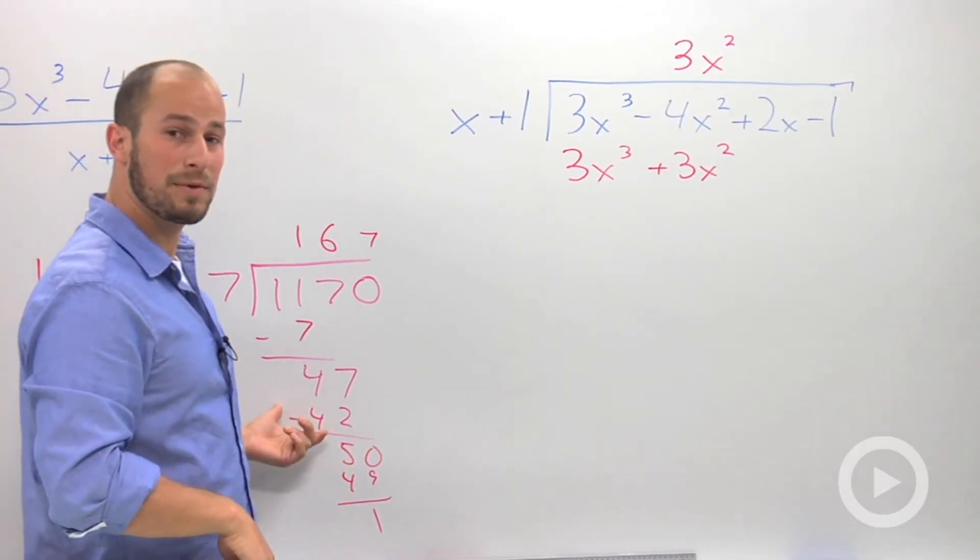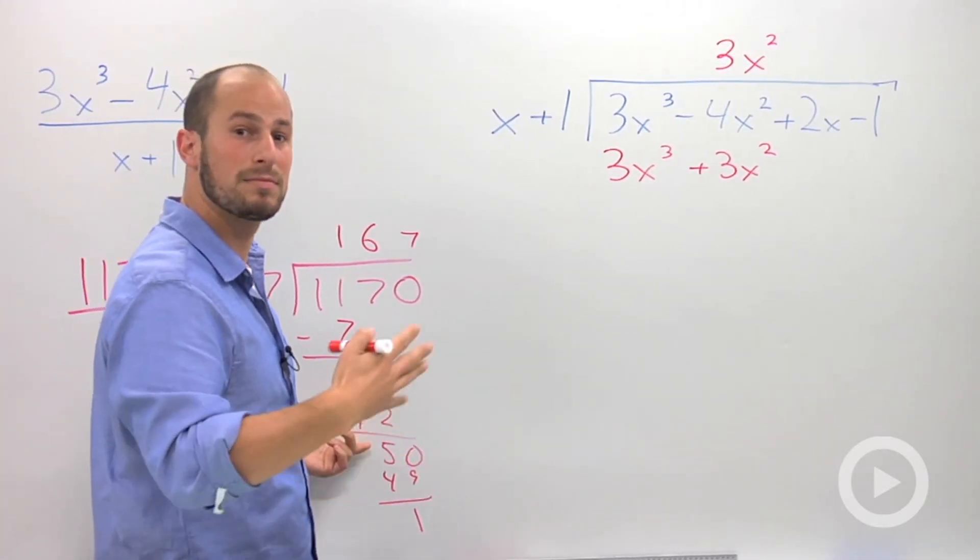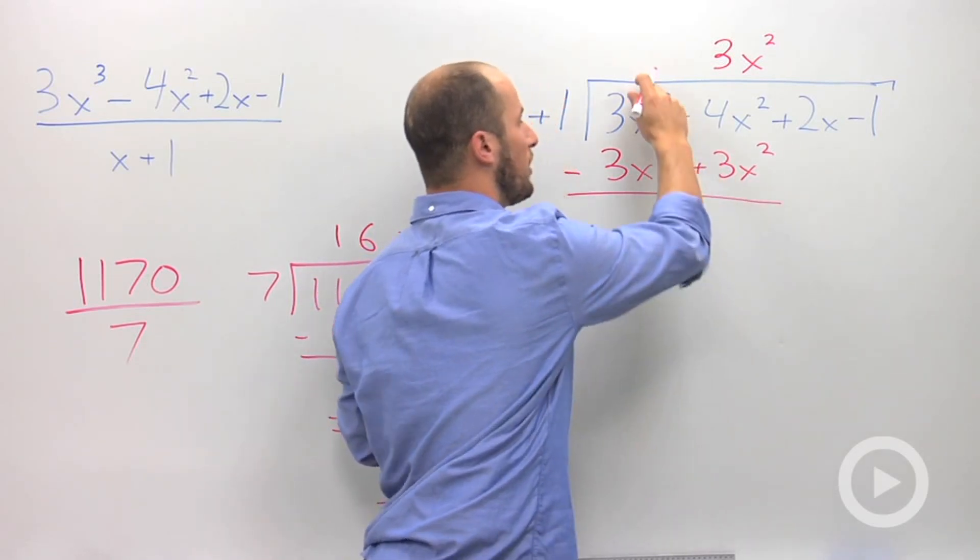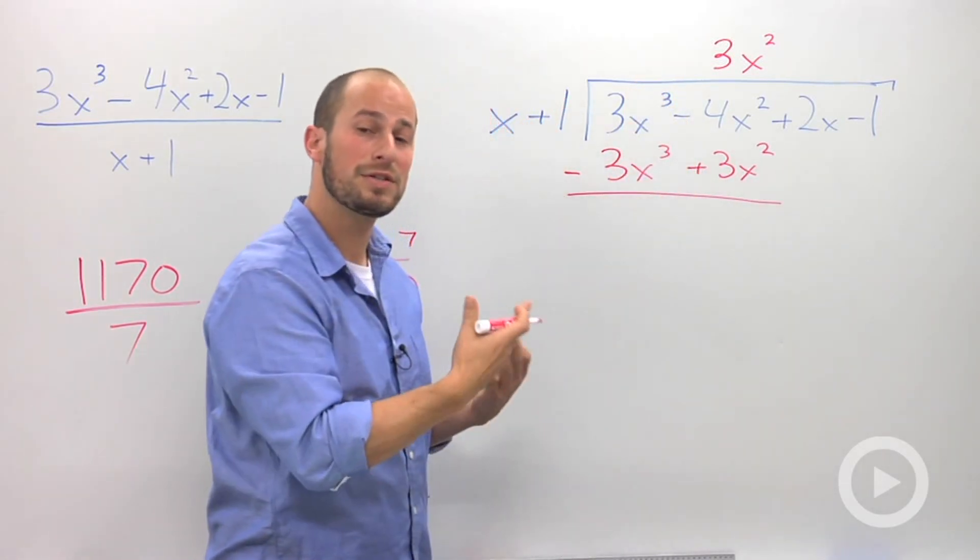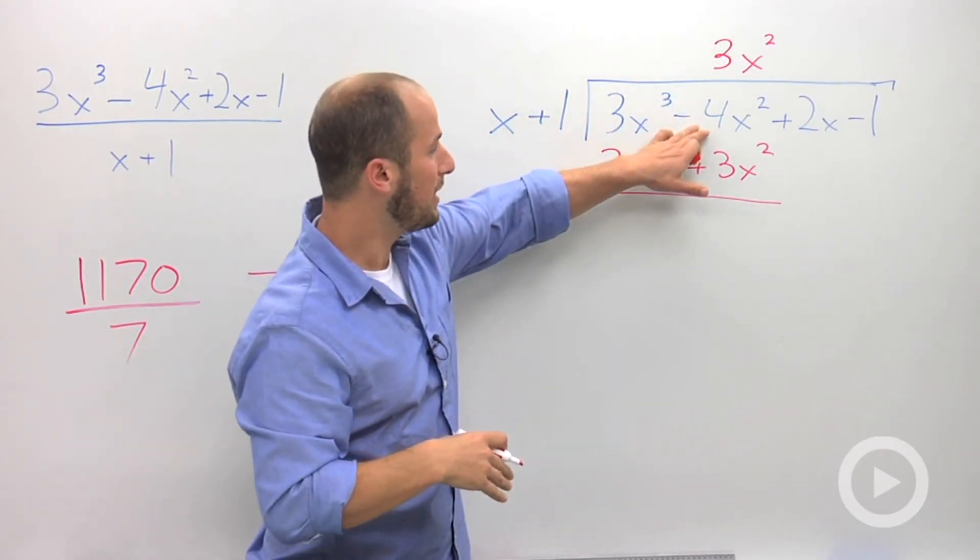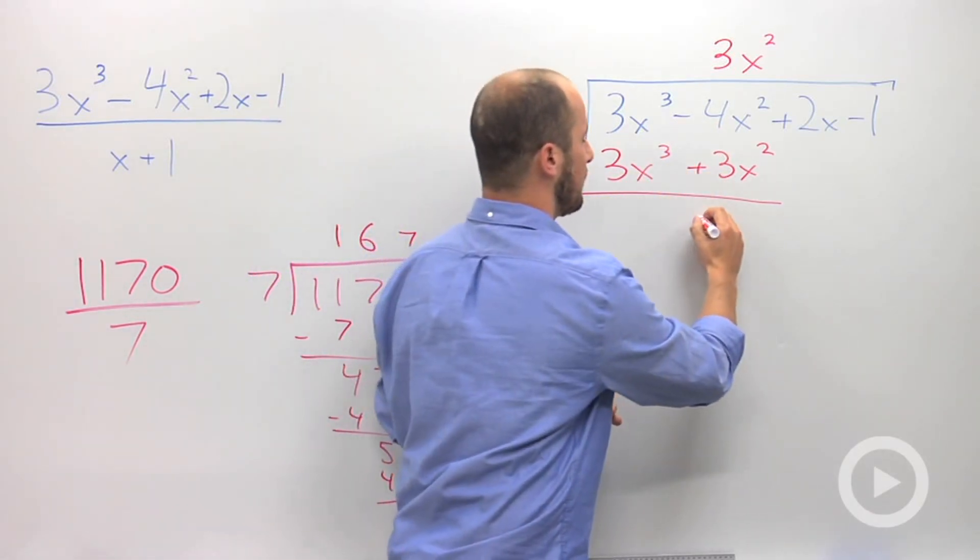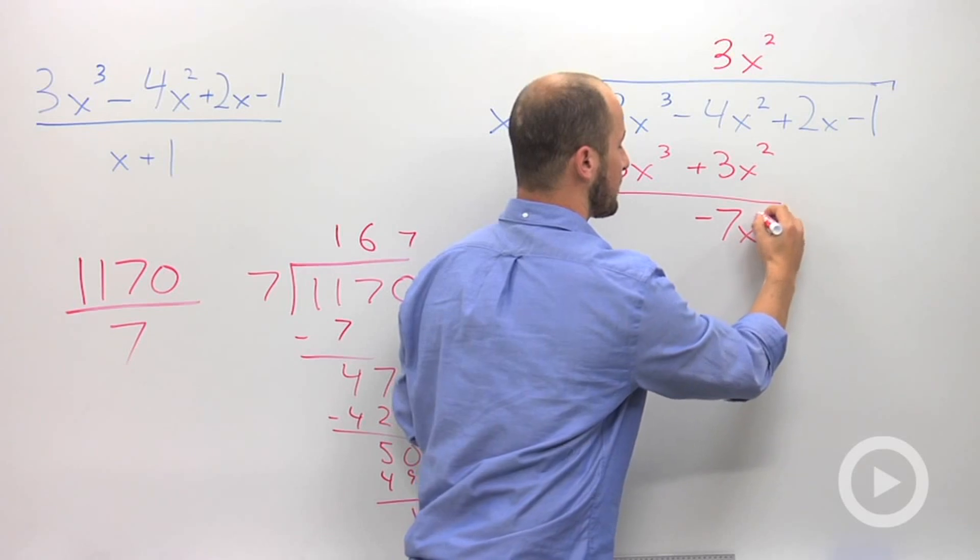Just like we did over here with our numbers, we need to subtract, okay? So, subtraction, 3x cubed minus 3x cubed, those cancel, which is what we wanted. And the negative 4x squared minus 3x, make sure you distribute that negative sign, becomes negative 7x squared.